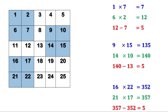Now let us explain using algebra why this is so. Let the first number be x. When the first number is 1, the second number is 2. When the first number is 9, the second number is 10. When the first number is 16, the second number is 17. The second number is 1 more than the first number. Therefore, if the first number is x, the second number is x plus 1.